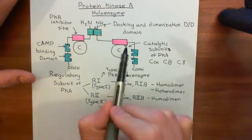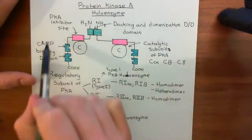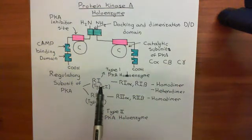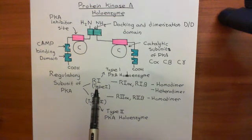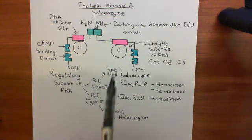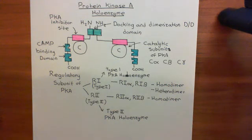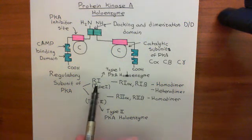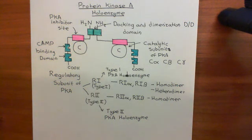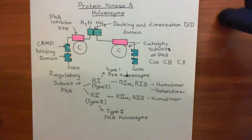This full holoenzyme is currently the inactive form of protein kinase A — the form it exists in within the cytoplasm of your cells. In the next video we'll see what the difference is between type 1 and type 2 protein kinase A holoenzymes, then move on to the activation of the holoenzyme, and finally what it does once activated.